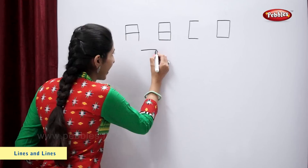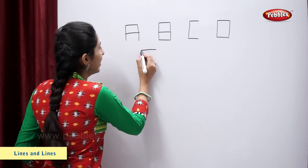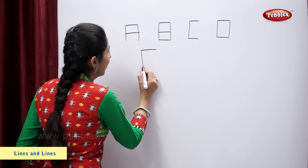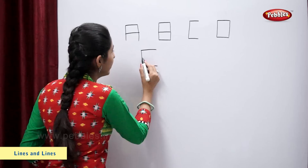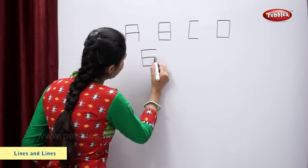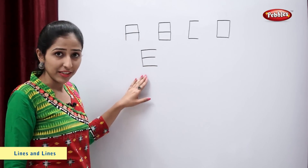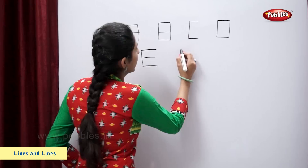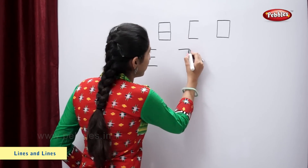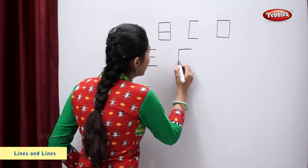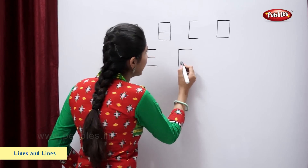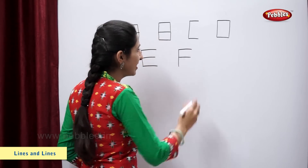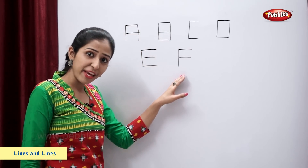Sleeping line, standing line, sleeping line, another sleeping line — letter E. Sleeping line, standing line, a sleeping line — letter F.